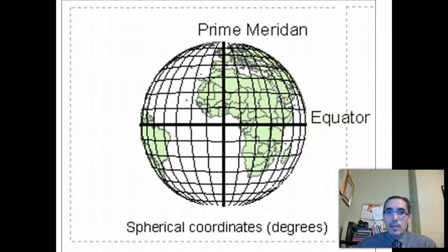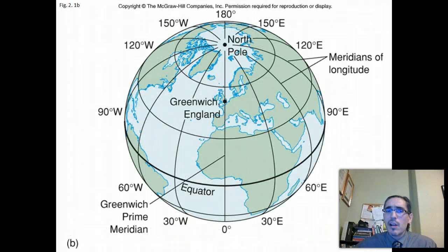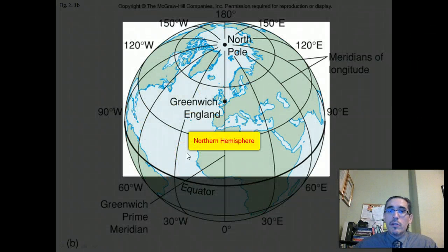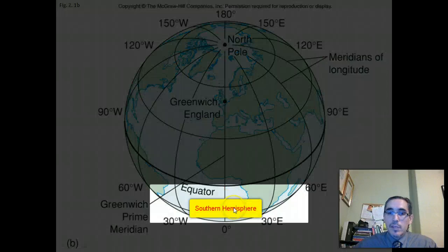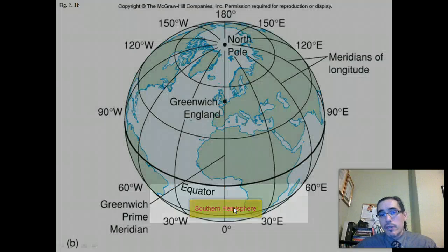So how does this work? Well, let's start with the equator. So the equator, again, which runs through the middle of the Earth, is the starting point from which we will measure our north-south position. So if you are north of the equator, then you're in the northern hemisphere. If you're south of the equator, you're in the southern hemisphere.